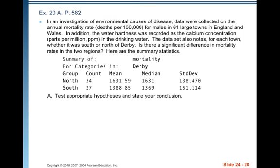Now exercise 20 on page 582. In an investigation of environmental causes of disease, data were collected on the annual mortality rate (deaths per 100,000) for males in 61 large towns in England and Wales. Water hardness was recorded as the calcium concentration in ppm in the drinking water. The data also notes whether each town was south or north of Derby. Is there a significant difference in mortality rates in the two regions? We have summary statistics: 34 individuals in the north group, 27 in the south group, with means, medians, and sample standard deviations for both groups.